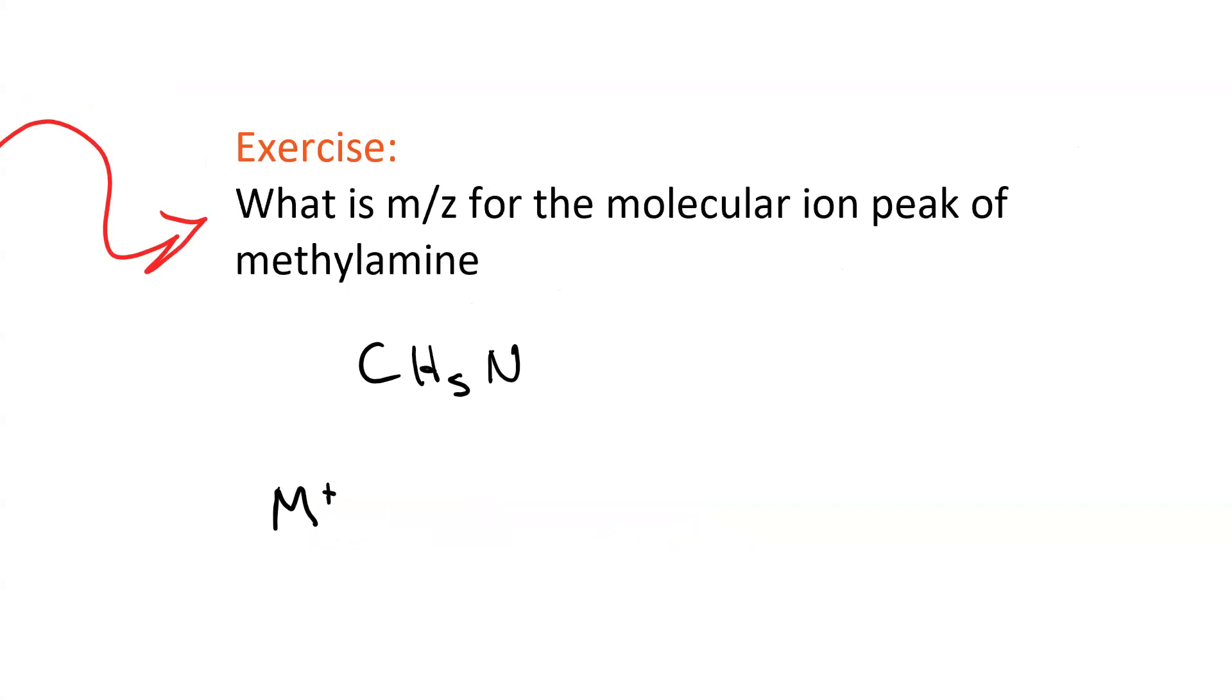So the molecular ion peak will have 12 times 1 for the one carbon. This is carbon. 1 times 5 for the hydrogen, so this is carbon, this is hydrogen, plus 14 for the nitrogen. 12 plus 5 plus 14.